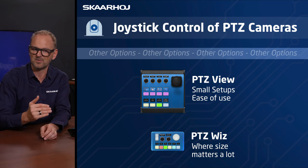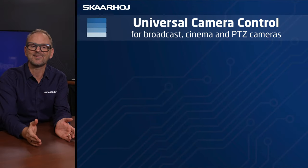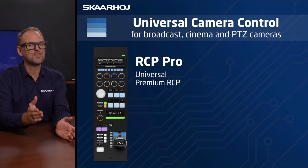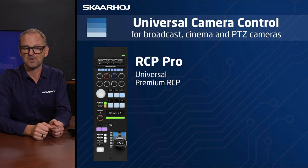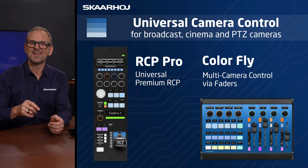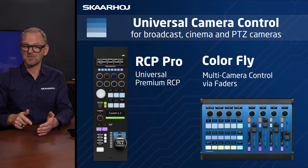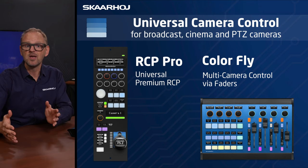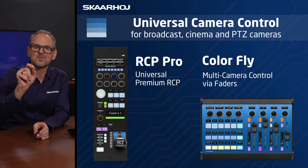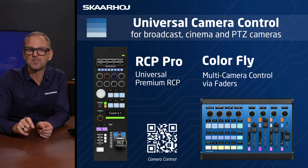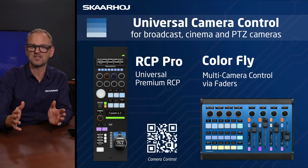Moving on to camera shading control, there are two main products I want to highlight: the RCP Pro and the Colorfly. The RCP Pro is our premium universal RCP, perfect for shading bays, OB trucks, and master control rooms — ideal for single camera control. The Colorfly is vastly different, based on motorized faders that move into position as you change cameras, so it's designed for multi-camera control. I'd encourage you to scan the QR code or click the link in the description for our booklet on camera control options.